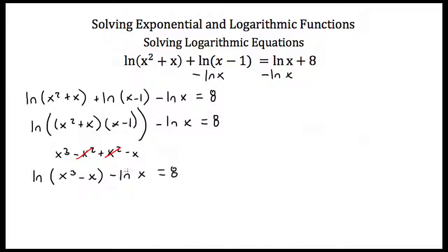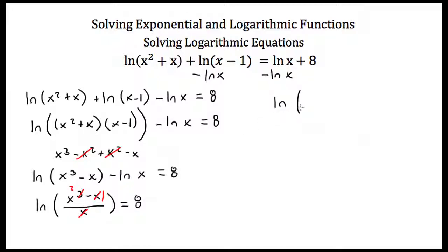The two remaining logs on the left-hand side are being subtracted, so I can use the quotient property to combine them. This gives the natural log of (x cubed minus x) all over x, equal to 8. If I divide x cubed minus x by x, one x cancels from the numerator and the x in the denominator cancels, and I'm left with the natural log of x squared minus 1 is equal to 8.